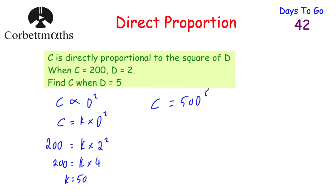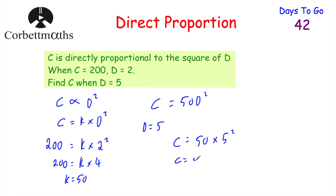Now I've been asked to find C whenever D is equal to 5. So substituting 5 into our formula: C is equal to 50 multiplied by 5 squared. Remember our order of operations — we have to square before we multiply, just like in pi r squared where we square the radius before multiplying by pi. So we square 5 first: that's 25. So C is equal to 50 multiplied by 25, which equals 1250. So whenever D is equal to 5, C is equal to 1250.